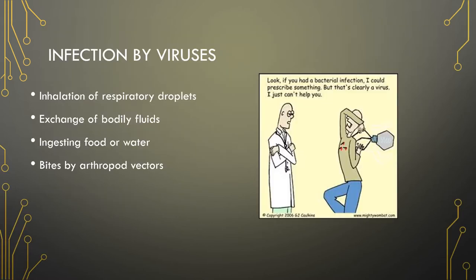Viruses infect us by four main ways: one, inhalation of respiratory droplets; two, exchange of bodily fluids; three, ingesting contaminated food or water; and four, bites from arthropod vectors.